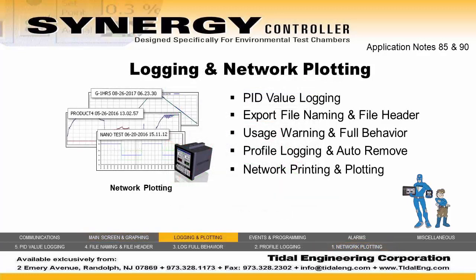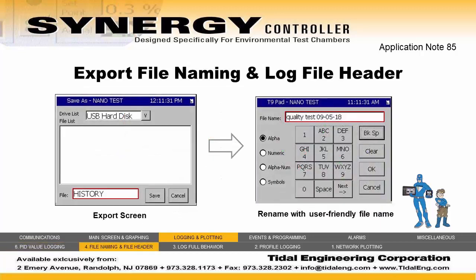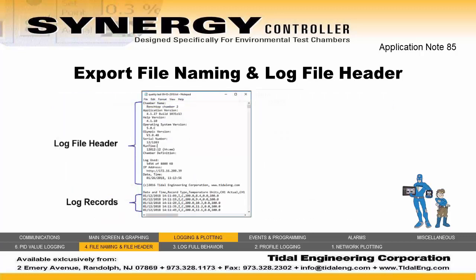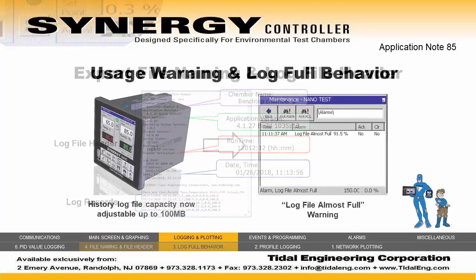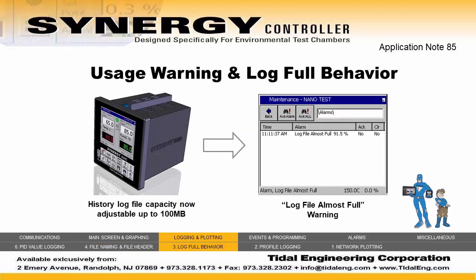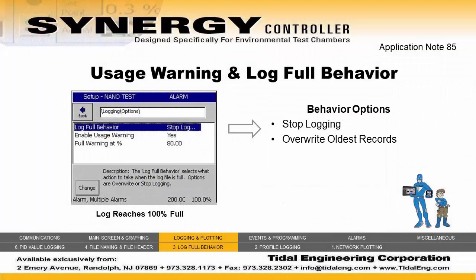Now we look at logging and network plotting features. Number 5: PID Value Logging. The Synergy Controller can log PID values, constants, and variables to assist with chamber tuning and troubleshooting. Number 4: File Naming and File Header. When exporting log files to a USB, users have the option to give the file a descriptive user-friendly name. Additionally, each log file contains a file header identifying the chamber name, software version, as well as other parameters including runtime and export time and date. Number 3: Usage Warning and Log Full Behavior. The Synergy Controller history log file has a capacity that is now adjustable up to 100 MB, with a programmable capacity warning. You can also specify whether the controller stops logging or overwrites the oldest log records when the log file is full.